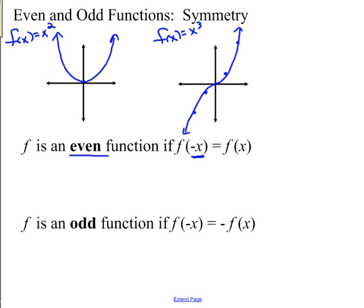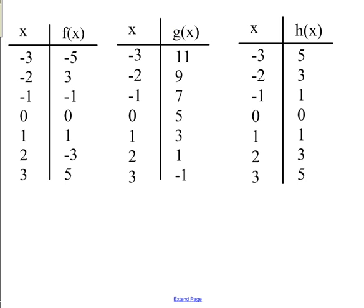One thing you might notice is that the even function X squared has an even power on X, and the odd function has an odd power on X — that actually turns out to be true for how we can identify even and odd. Let's look at a table of some even and odd functions. Remember, few functions are even or odd; they are special cases.